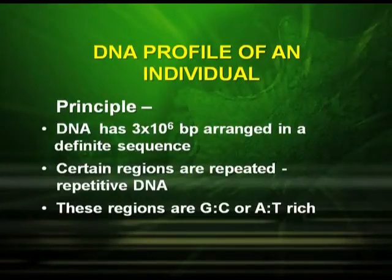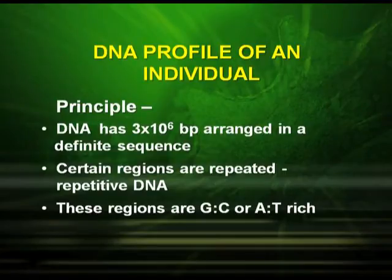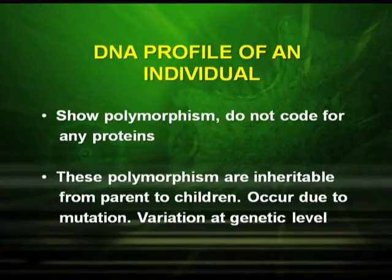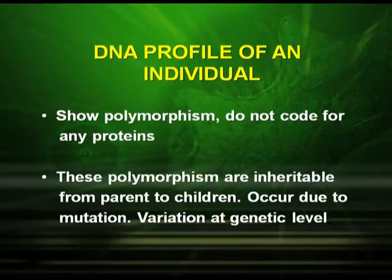DNA fingerprinting is the DNA profile of an individual. It is based on the principle that DNA has 3 × 10⁶ base pairs arranged in a definite sequence. Certain regions are repeated, called repetitive DNA, which are G-C or A-T rich. These regions show polymorphism — they do not code for any proteins. These polymorphisms are inheritable from parent to child and occur due to mutations.